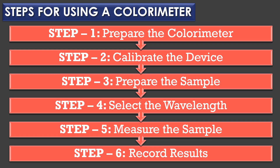Steps for using a colorimeter — there are six steps. Step one: prepare the colorimeter by turning on the device and allowing it to warm up. Step two: calibrate the device using a blank solution, either distilled water or solvent, to set the baseline or zero absorbance. Step three: prepare the sample by filling the cuvette with the sample solution. Step four: select the wavelength by choosing the appropriate filter to ensure the color of the solution is complementary to the wavelength selector. Step five: measure the sample by inserting the cuvette into the colorimeter; the instrument will measure absorbance or transmittance. Step six: record results — the colorimeter will display the absorbance or concentration value; record that result.